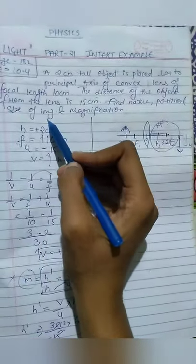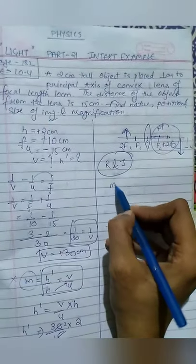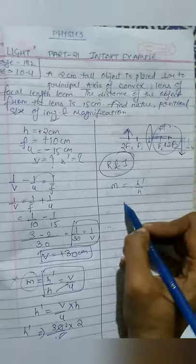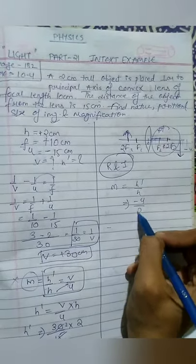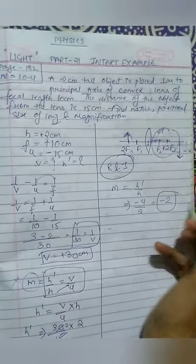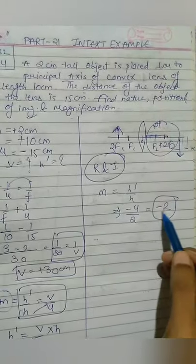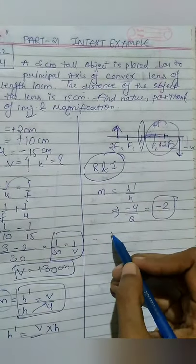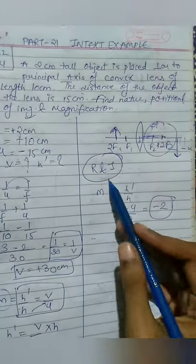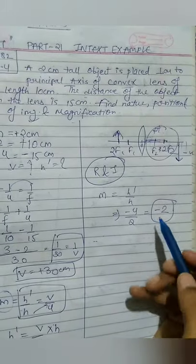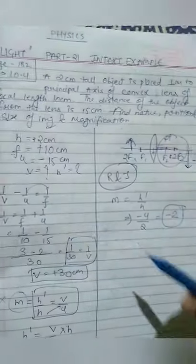So we have found size and image distance. Magnification is h' upon h. So h' is minus 4, h is 2, so magnification is minus 2. Negative sign in magnification represents that image is real and inverted. The magnification is minus 2. This was an important question.